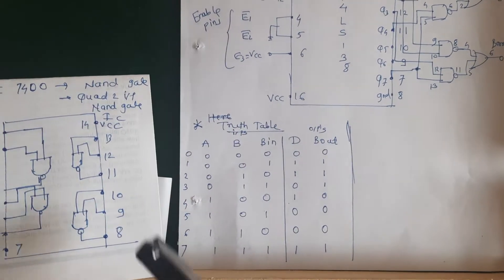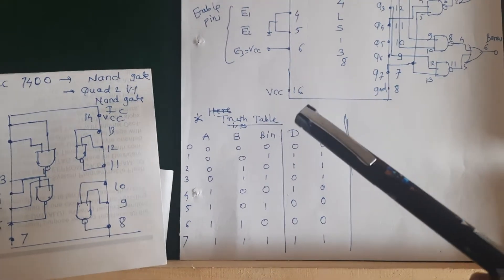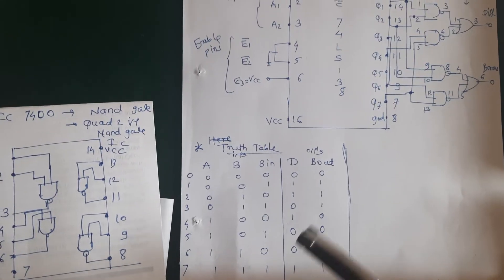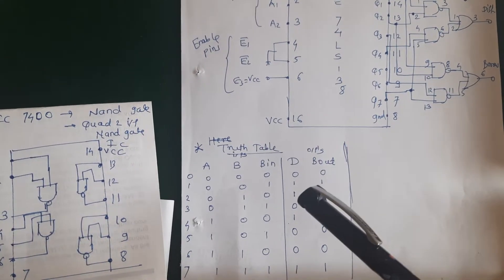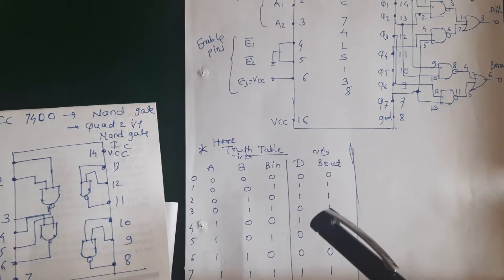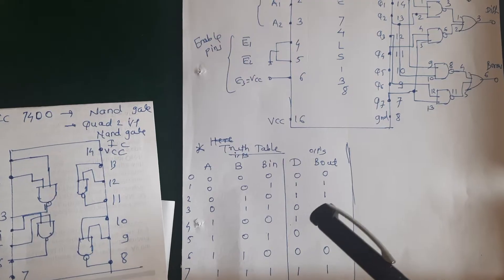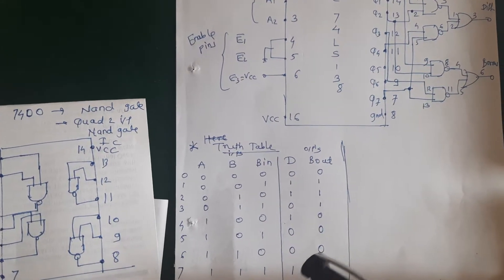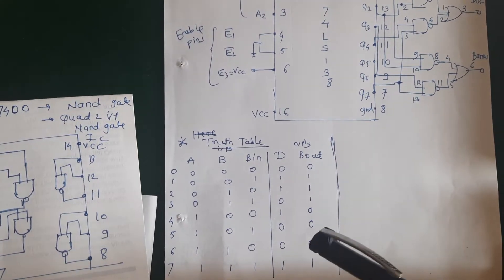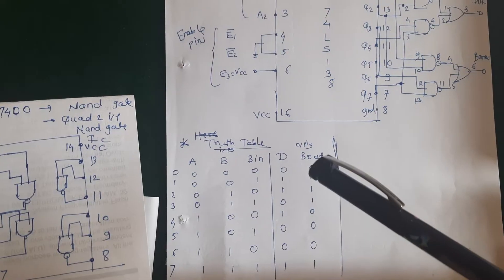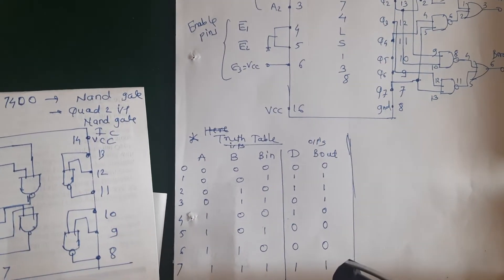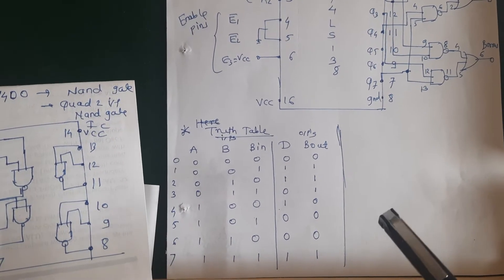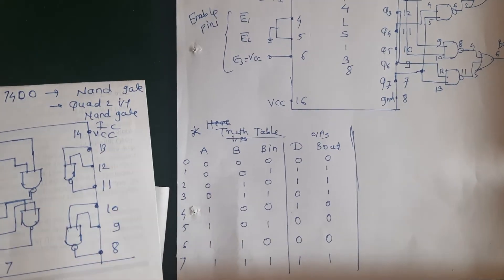What a full subtractor does is it can subtract 2 binary numbers with the borrow in. You can see here the truth table. In the truth table we have taken 3 inputs A, B, Bin and 2 outputs: difference and borrow. From the truth table, for difference the min terms are 1, 2, 4 and 7. And for borrow out we have 1, 2, 3 and 7. For these min terms we will get the output 1.